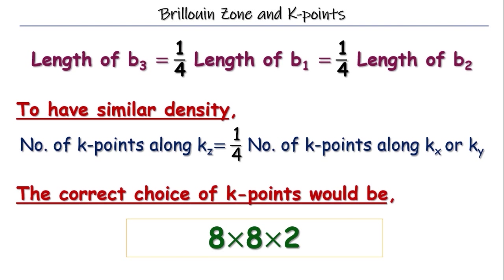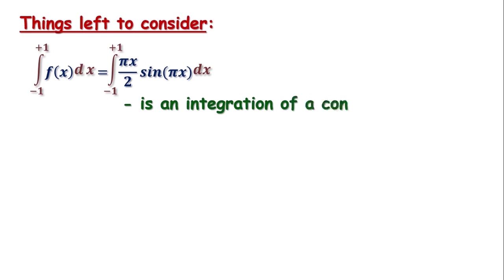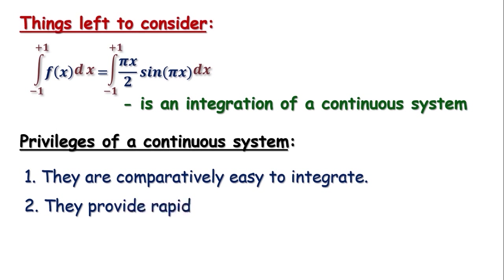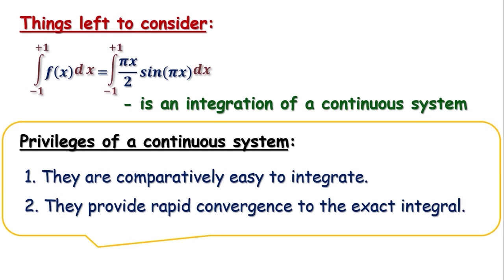Still, many things are left there to consider. The numerical integration we talked about is an integration of a continuous function. Two main privileges of using continuous functions are, First, they are comparatively easy to integrate and Second, they provide rapid convergence to the exact integral. But unfortunately, continuity is not a property that is always available in k-space integrals for DFT calculations. A special and important example of this fact is for metals.